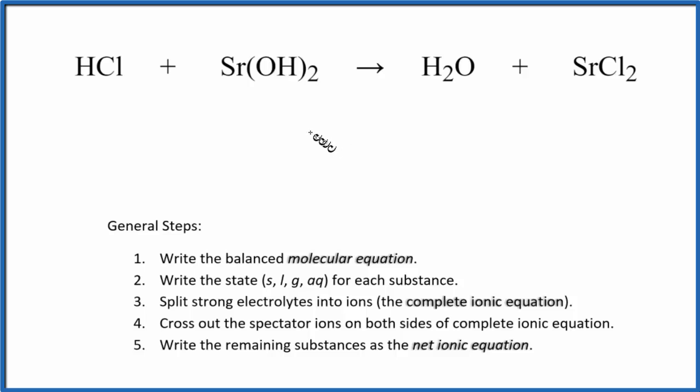The first thing we do when we balance these net ionic equations is we write the balanced molecular equation. So this is the molecular equation. Looks like we need to put a 2 here that will balance the chlorines, and then a 2 here that will balance the hydrogens and oxygens.